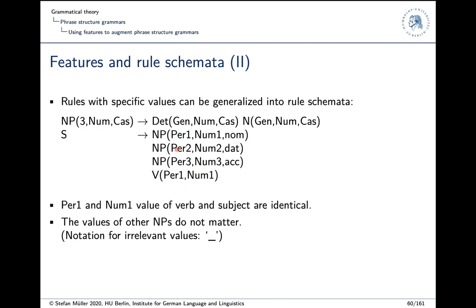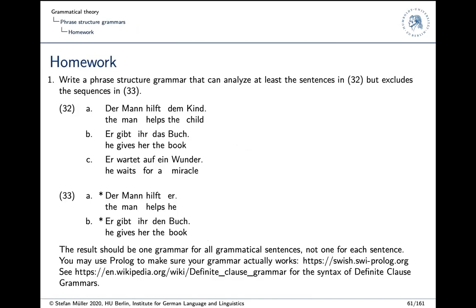One can, instead of having per two and num two here, one can write an underscore. That means I don't care what the value is here. So for objects, we don't have object agreement in German. So the person and number are irrelevant on the clause domain. And case values are fixed. So that's just written down that a ditransitive verb needs these three cases.